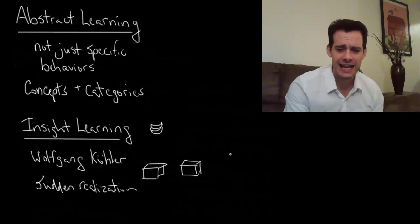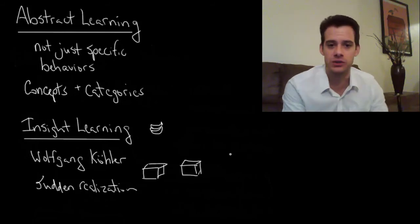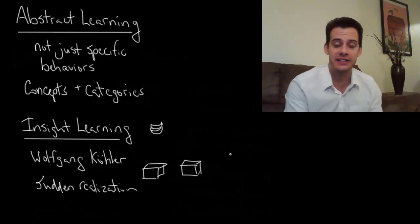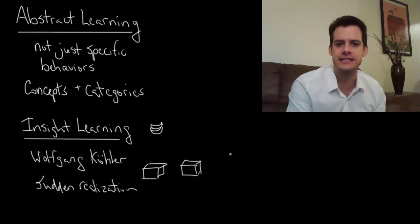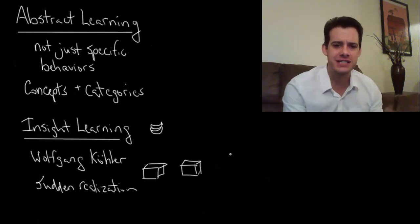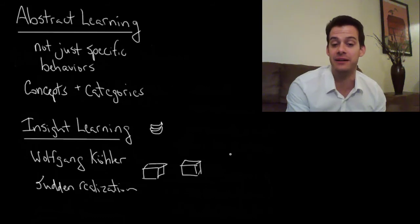Maybe the boxes would tumble over the first time and the chimps would go right back to trying this same solution. This showed it wasn't that they were repeating the behavior because it had been reinforced.